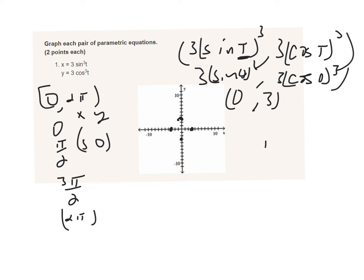So the sine of pi over four, we know, is the square root of two over two, and then we're going to raise that to the third power. So that would be two square root of two over eight, and then that's going to multiply by three.